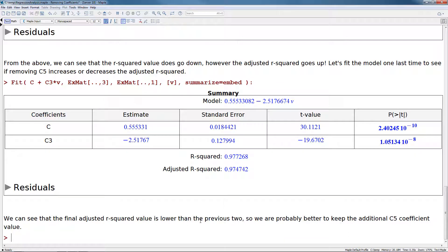So in this case, we conclude actually that it's actually better to just keep C5 within our summary, and we leave that within the fitted model.